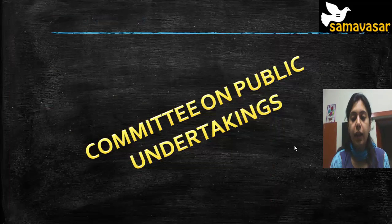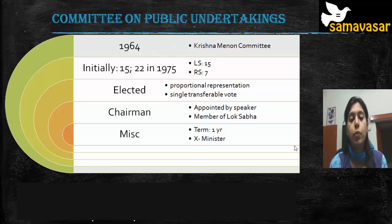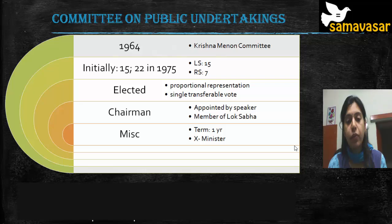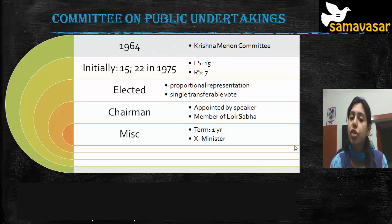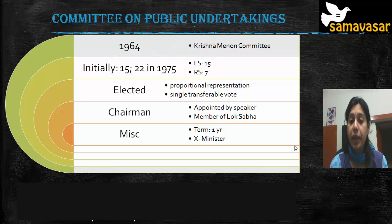The Committee on Public Undertakings was started in 1964 on the recommendations of the Krishna Menon Committee. Initially it had 15 members, raised to 22 in 1975, of which 15 are from Lok Sabha and 7 from Rajya Sabha. Members are elected by proportional representation and single transferable vote. The chairman is appointed by the Speaker and by convention is a member of Lok Sabha. The term is one year and a minister cannot be part of the committee.